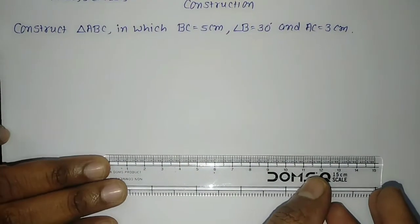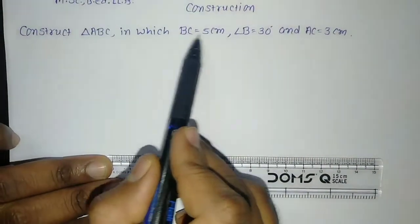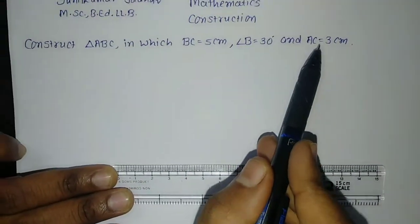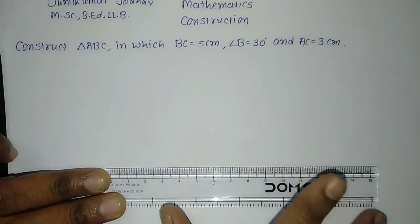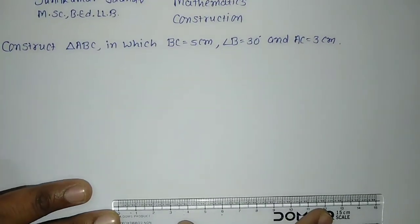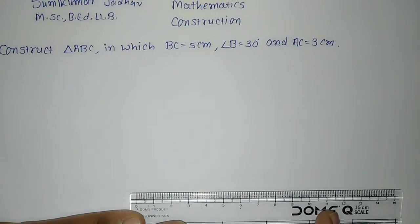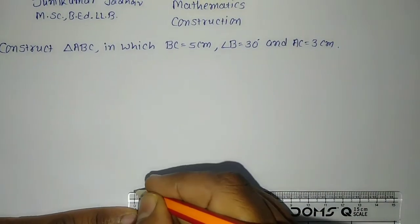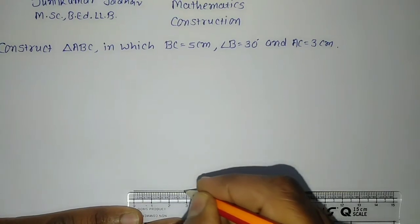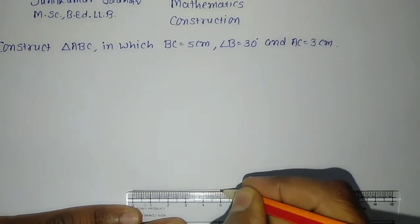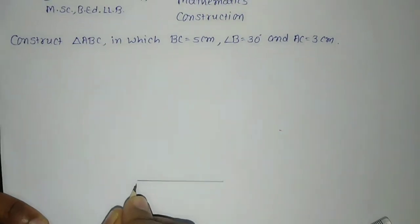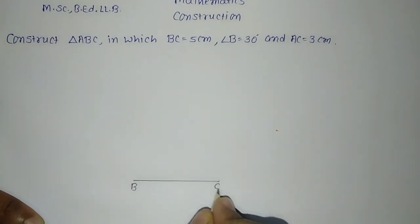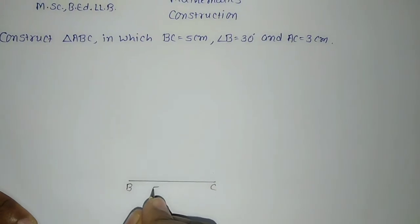First, we'll take this base BC. Why BC and not AC? Because angle B is given to be 30°, that's why we take BC as base. I'll draw BC equal to 5 centimeter. This is point B and this is point C. BC is equal to 5 centimeter.